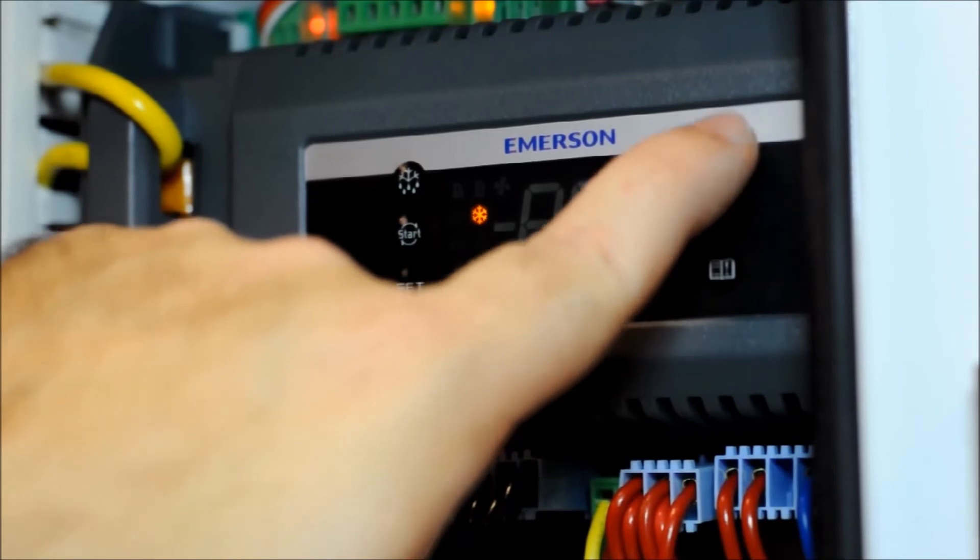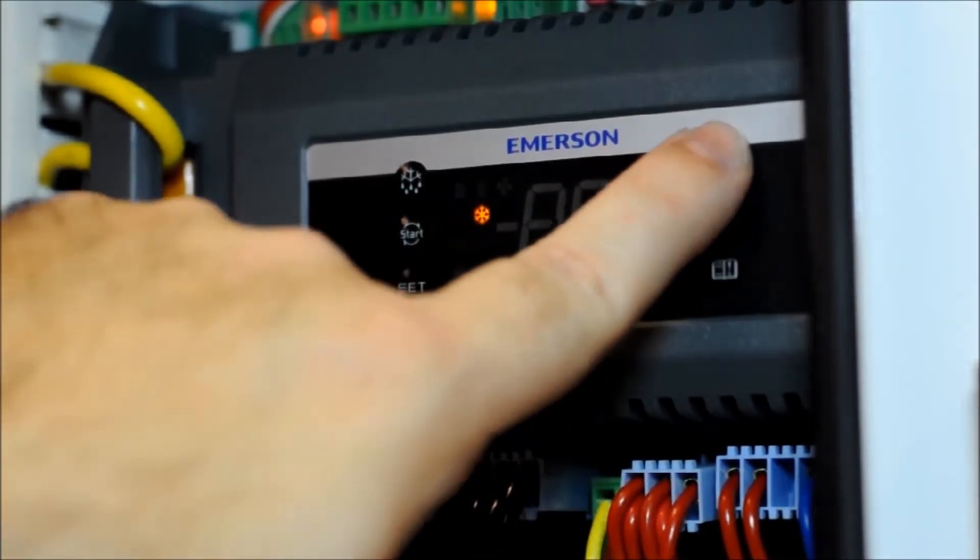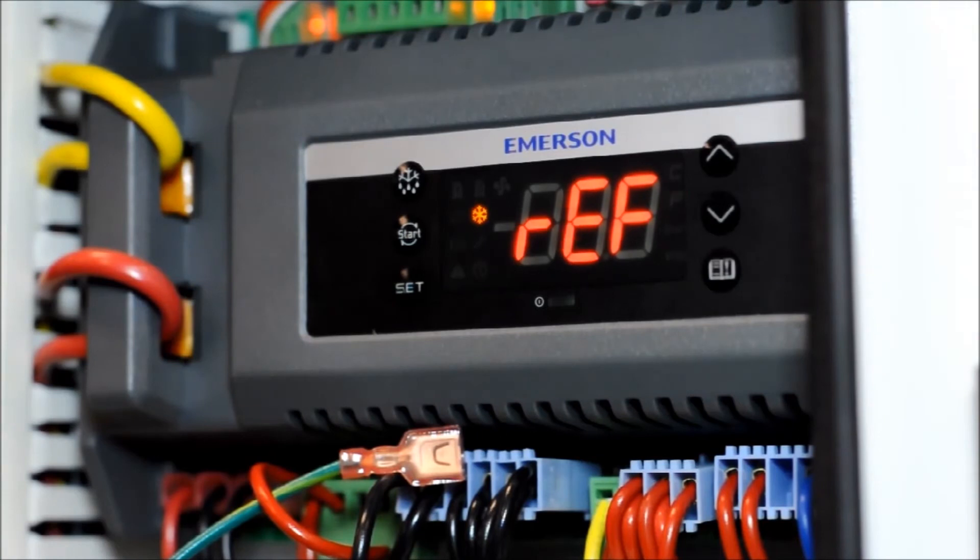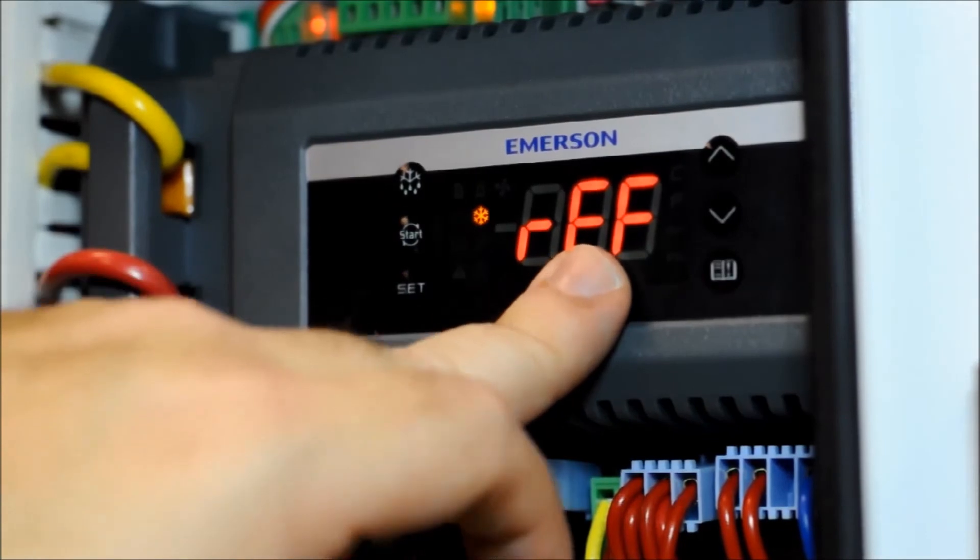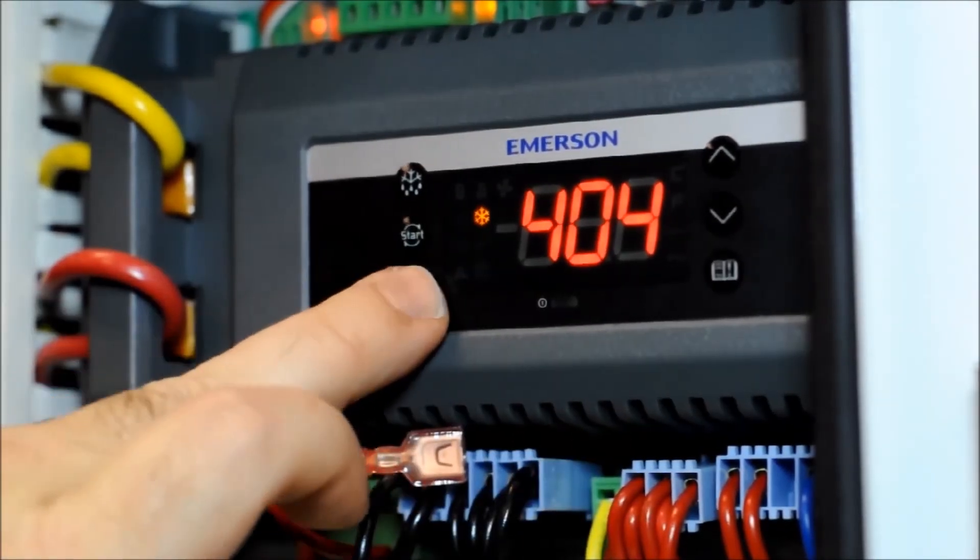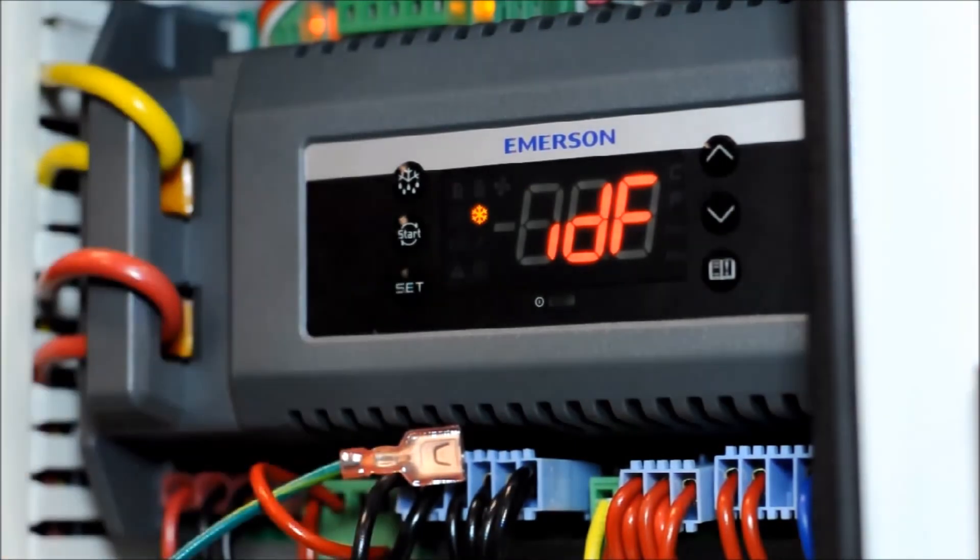It'll automatically move to the cut out parameter. Again, use the up and down arrow buttons to set the pressures that you want the cut out to be. After the cut out is the refrigerant. On these units, you do need to select a refrigerant for the unit to operate. In this case, we'll use 404.